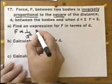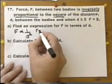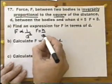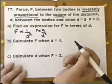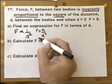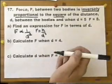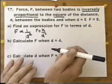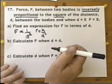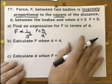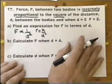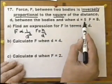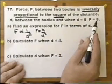That's the same as writing it with an equal sign as K over D squared. So that's the expression we're looking for, but we need to find the value of K — that's called the constant of proportionality. We'll use the pair of values: D equals 5 when F equals 8.